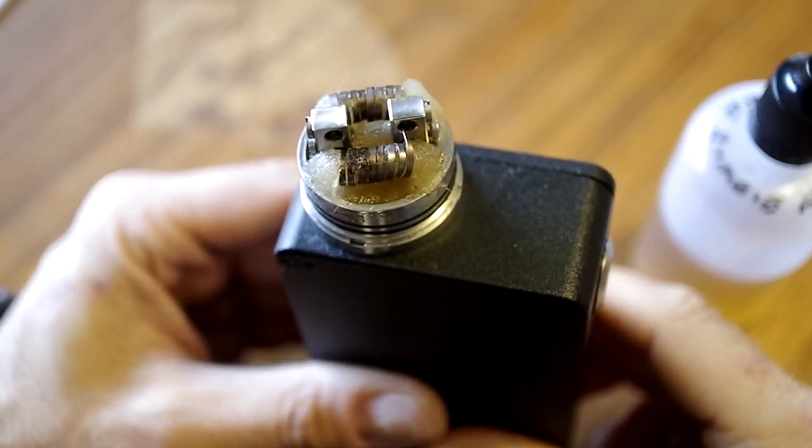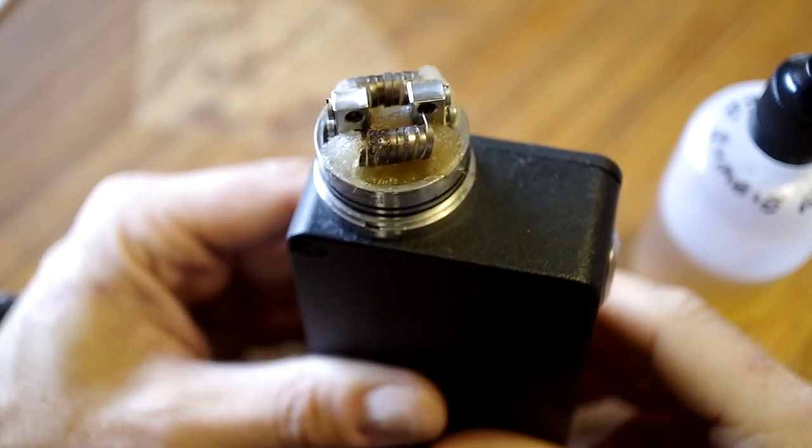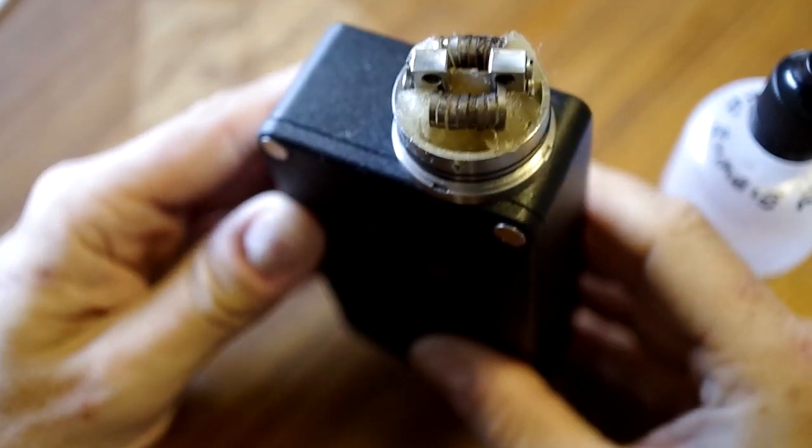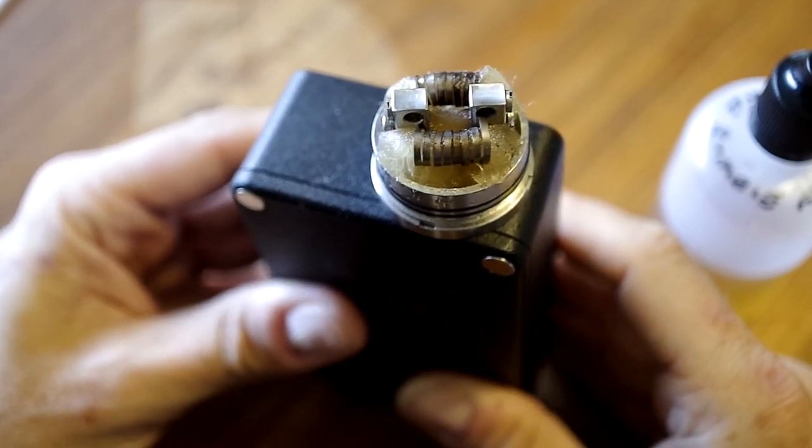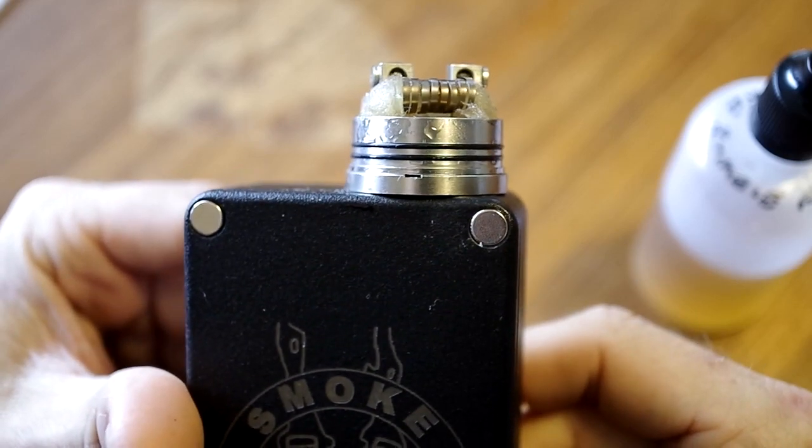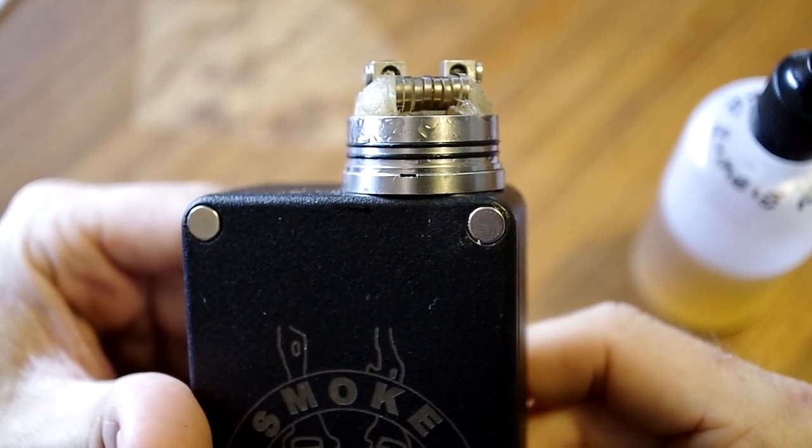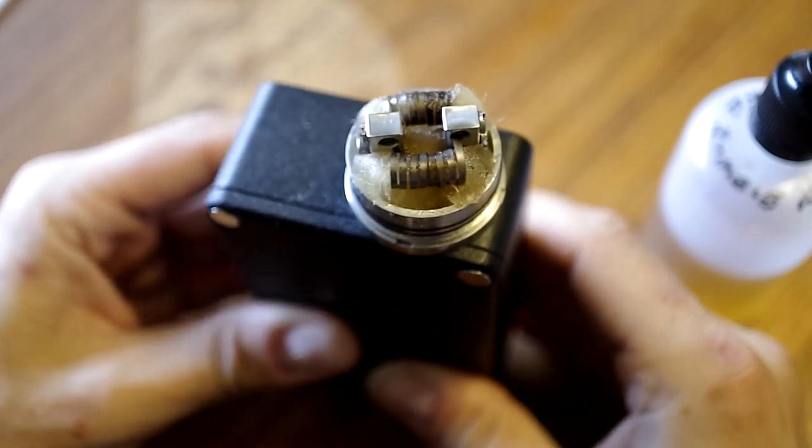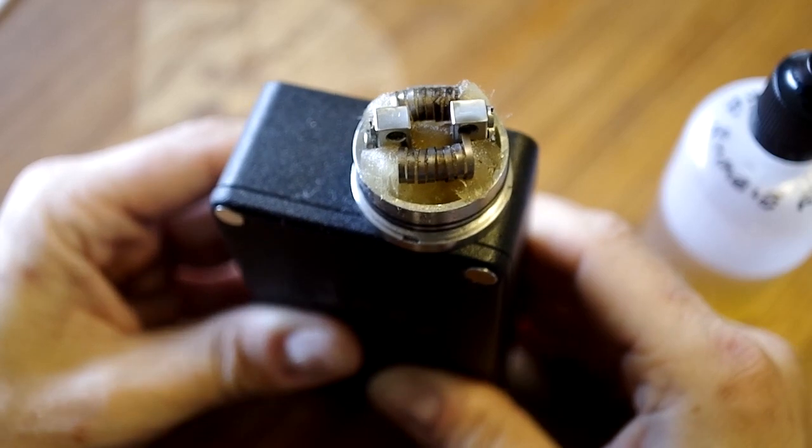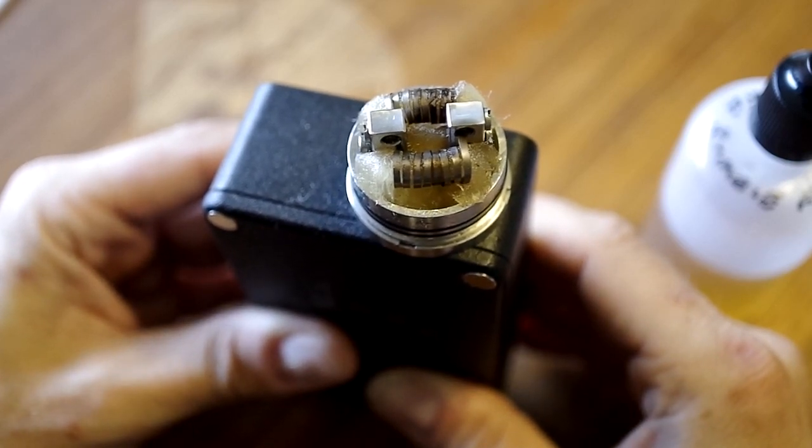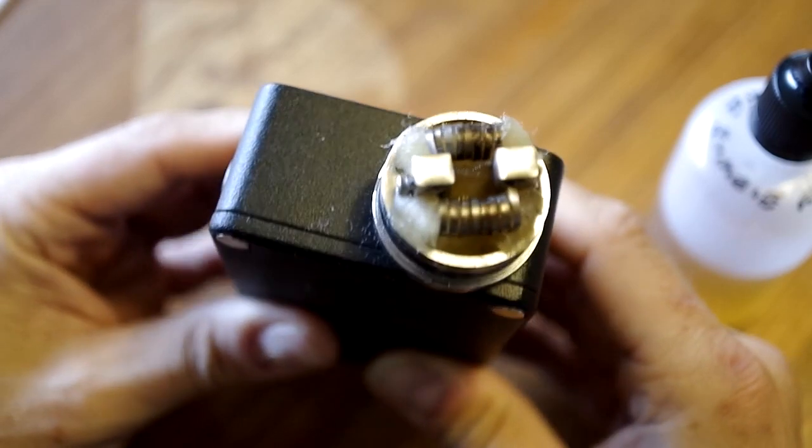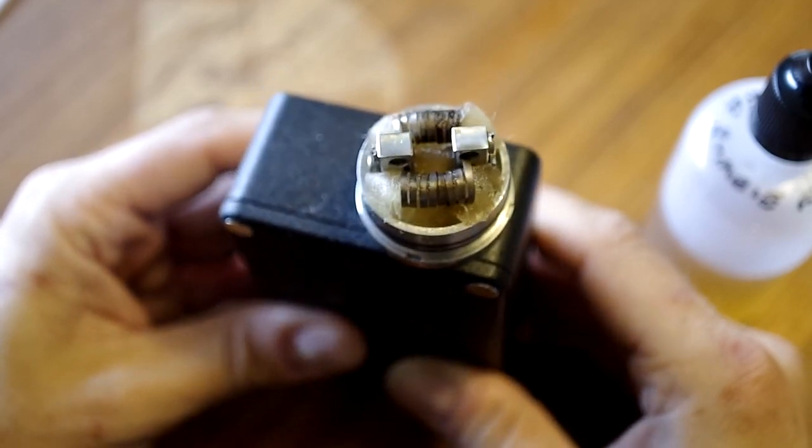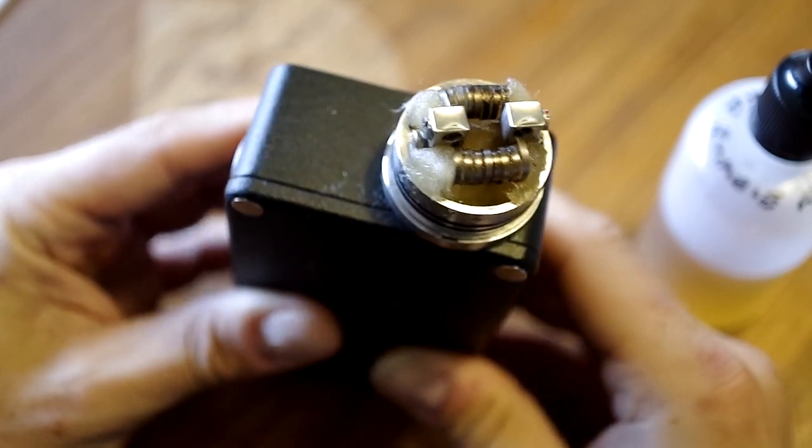And here it is, science applied. This is a Buddha 30 millimeter RDA on top of my smokestack mods 12.6 volt mech mod. The coils are 6 millimeters in diameter. They sit flush with the deck and the air holes. These are 0.6 ohm and being flat wire and this being 12.6 volts, we're talking above 220 watts.